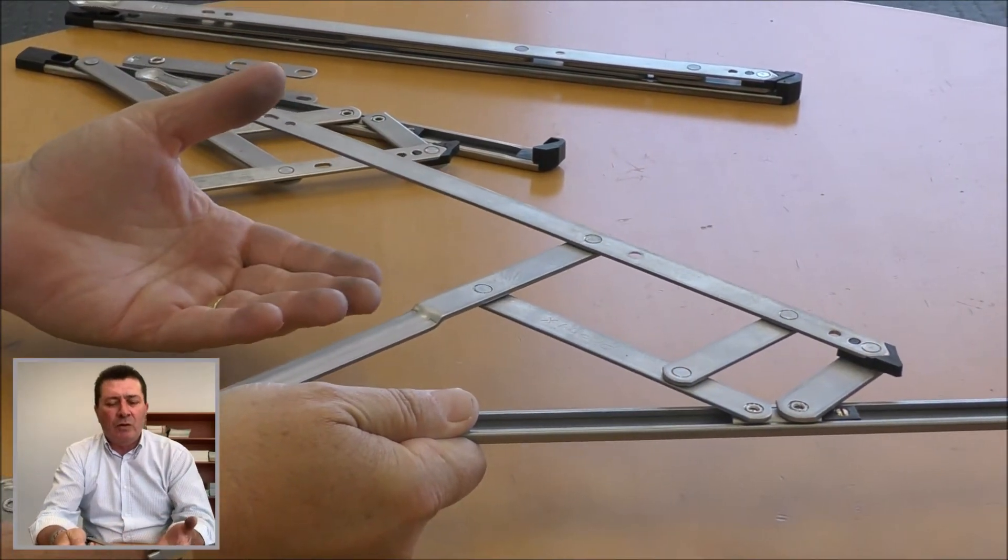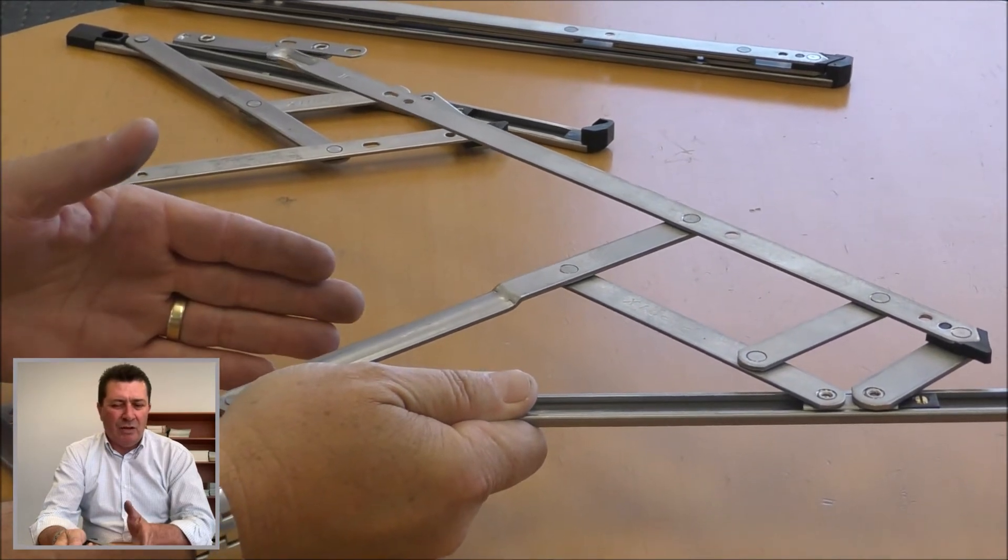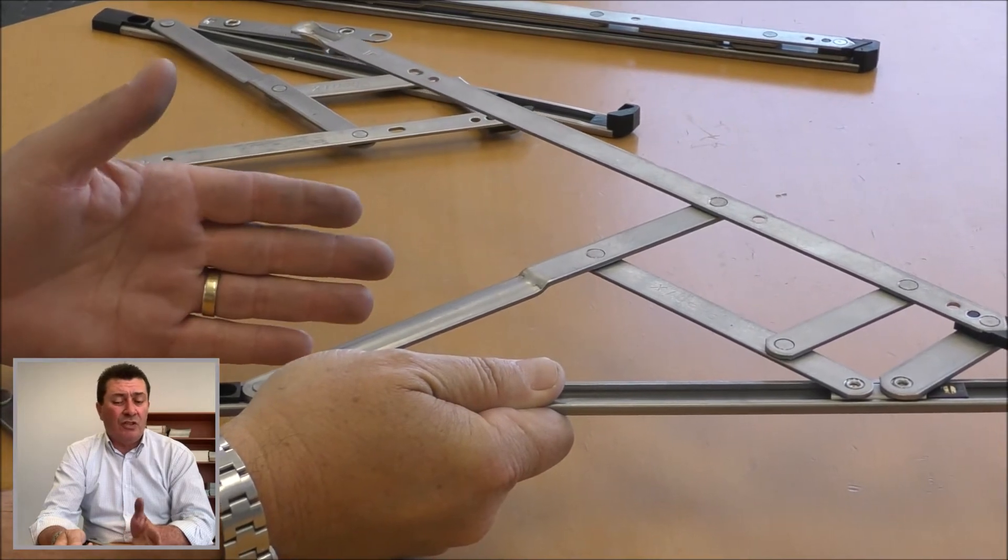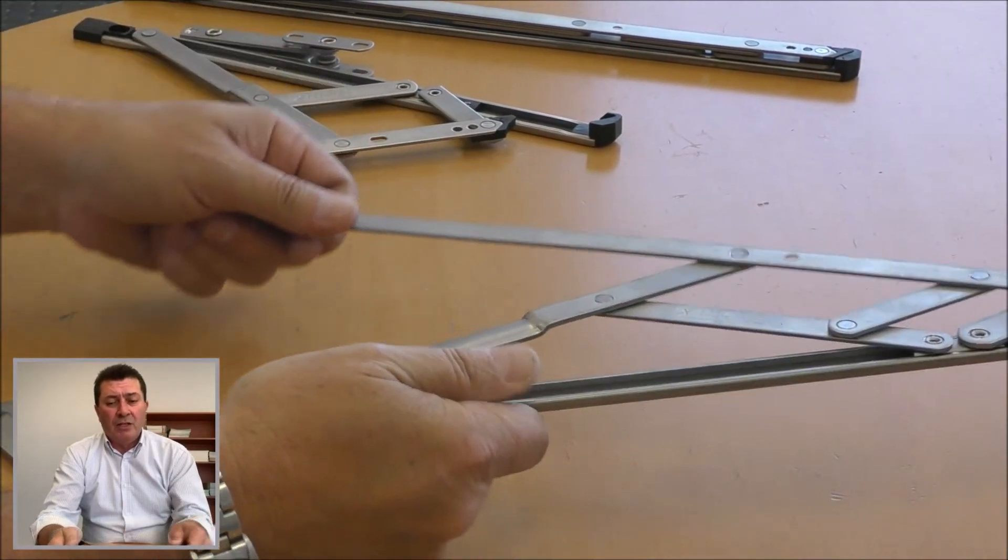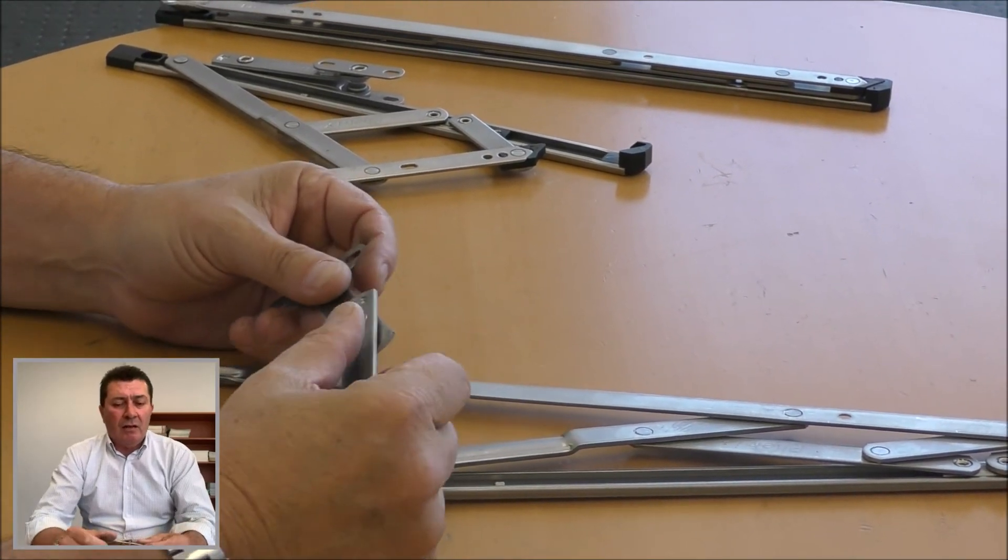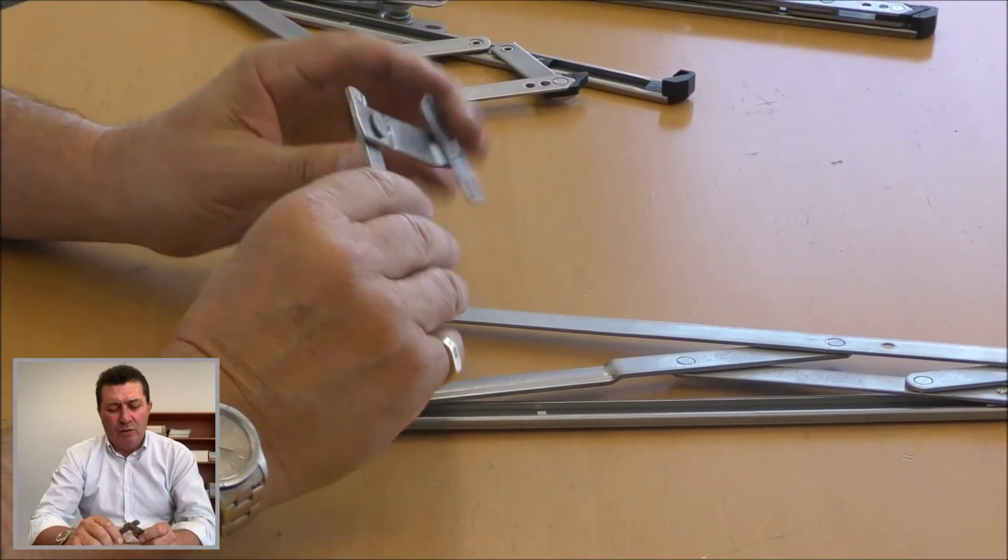the friction kicks in and the window will hold open. But in the restricted mode at 100 to 125 mil, the sash will self-close and the restrictor won't hold the window open. So we had to come up with a restrictor that would work with a four bar friction stay and hold the sash open. What we did was